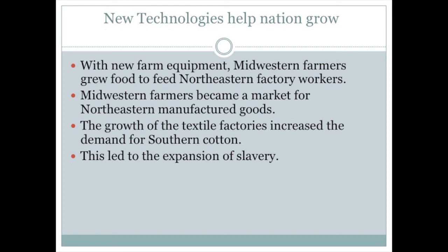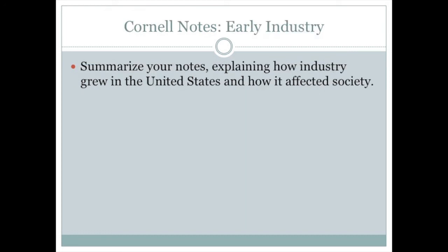The growth of textile factories increased demand for Southern cotton, and since the cotton gin made cotton easier to process, this would lead to an explosion in slavery in the South. Please summarize your notes explaining how industry grew in the United States and how it affected society, using specific details from the lecture. Thank you very much, and we look forward to discussing this in class tomorrow.